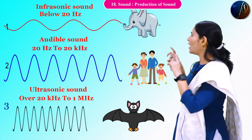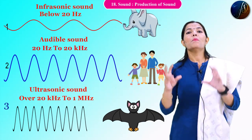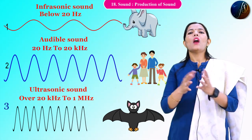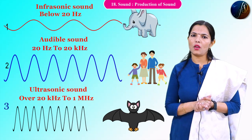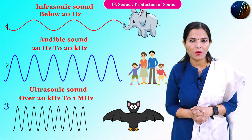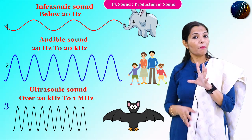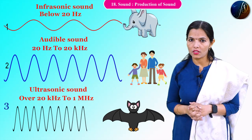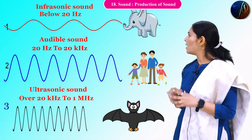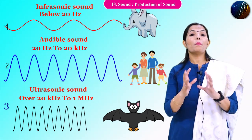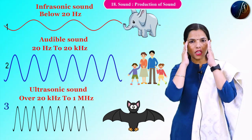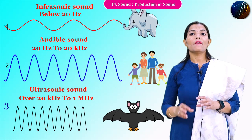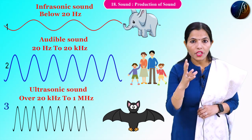Ultrasonic sound is not audible to humans. Special animals like dogs, cats, and bats produce this type of ultrasonic sound. The bat is a well-known example — its vision is not clear, but in the dark it uses ultrasonic sound to navigate. The bat produces ultrasonic sound which bounces off obstacles.